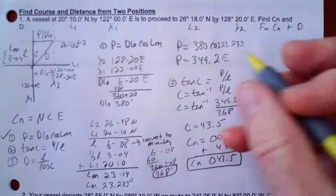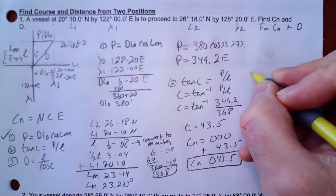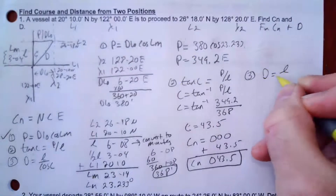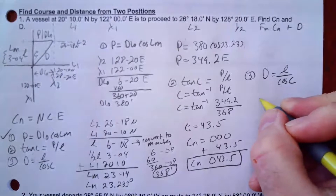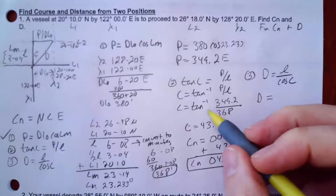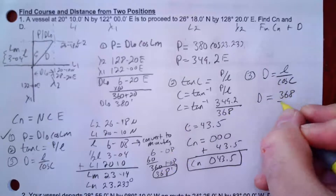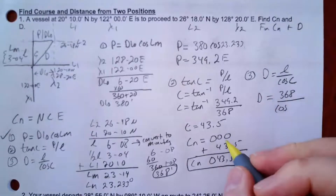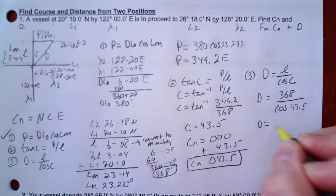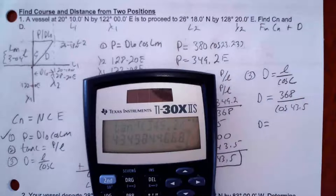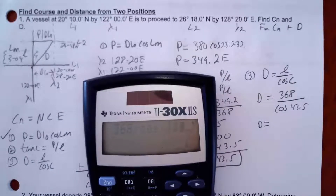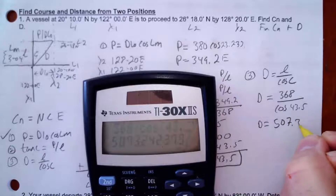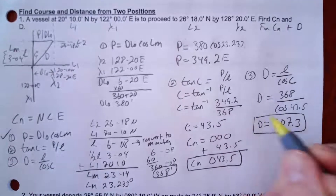For distance, I'll use formula three: D = L / cos C. L in minutes is 368, divided by cos(43.5°). So 368 / cos(43.5°) = 507.3. That is my distance: 507.3 nautical miles. Now I've answered both questions — course C(N) = 043.5° and distance D = 507.3.